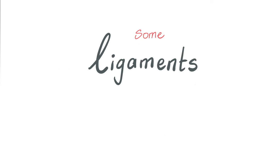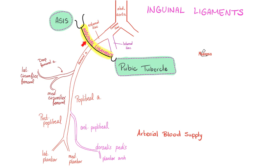Let's review some ligaments. In the last video, we discussed the inguinal ligament, which extends from the anterior superior iliac spine to the pubic tubercle. Did the inguinal ligament just emerge out of nowhere? Of course not. It is part of the aponeurosis of the external abdominal oblique muscle — it's the lower free border of the aponeurosis of that muscle.